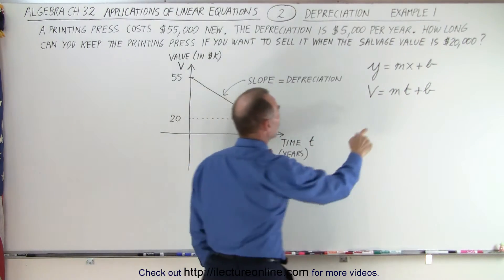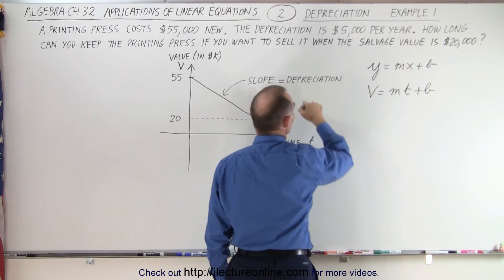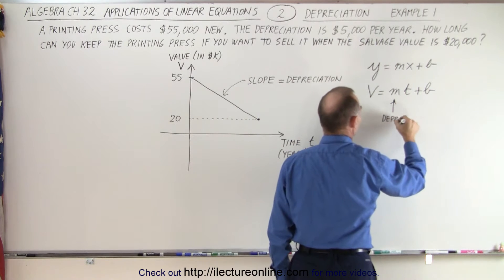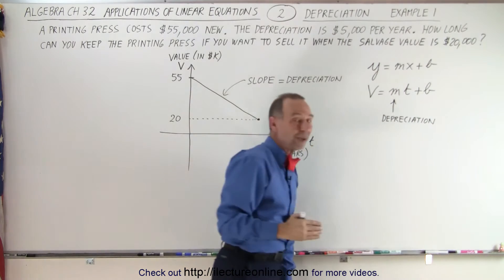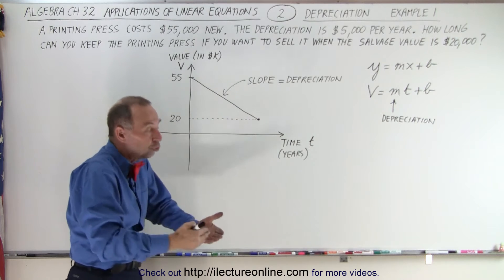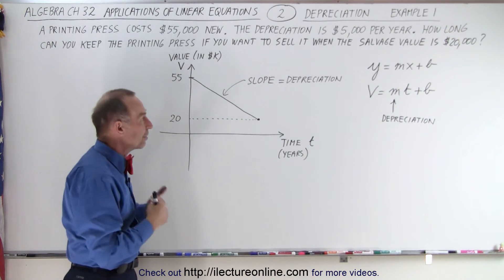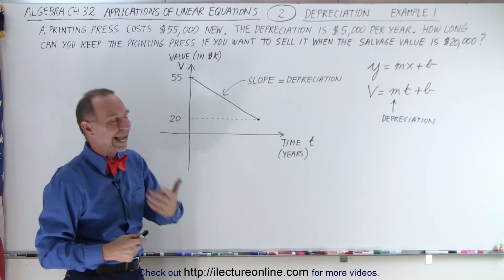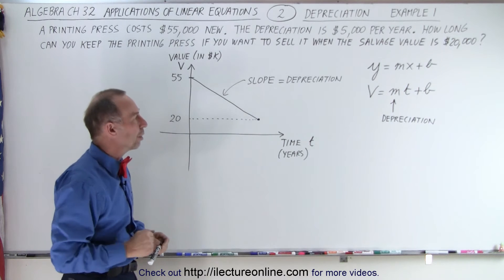Now m, of course, is a slope, and the slope represents a depreciation. So this here is a depreciation. And notice that since we have a negative slope, the depreciation is in terms of negative dollars. It loses $5,000 per year in value. So that's why we have a negative slope. Depreciation is a negative quantity. It's a negative slope.